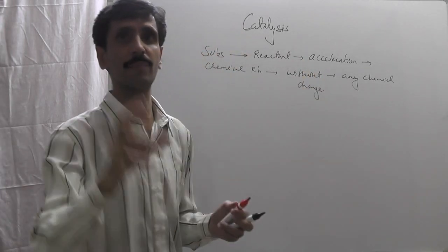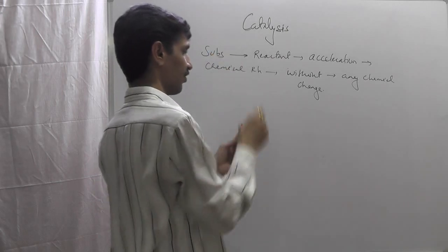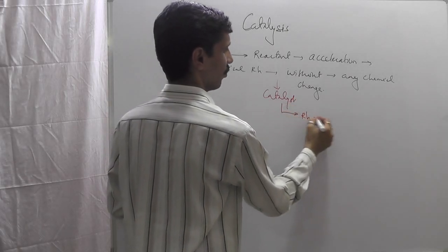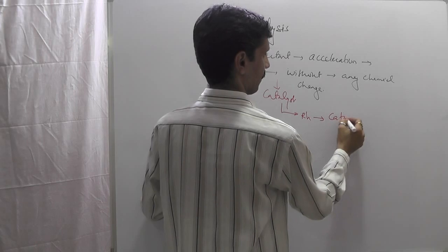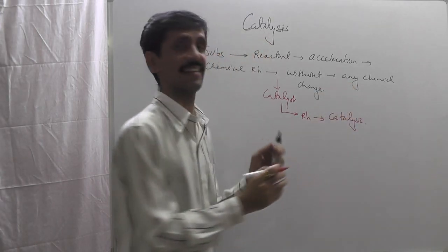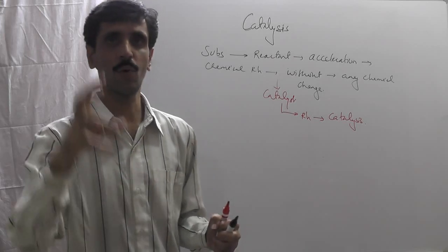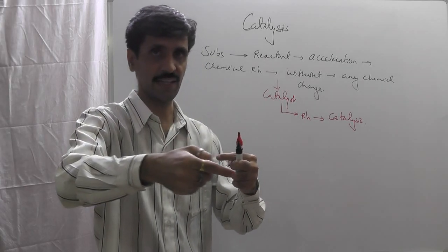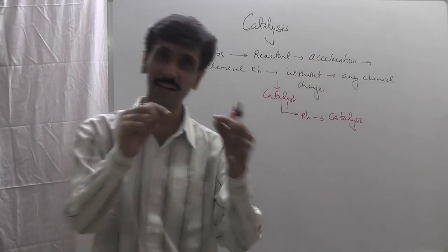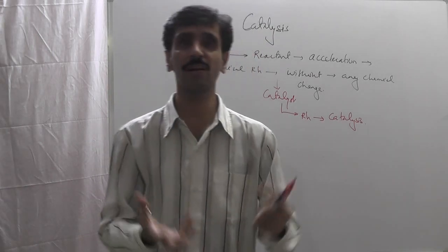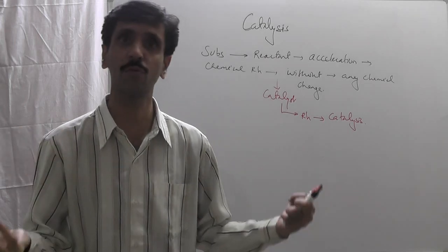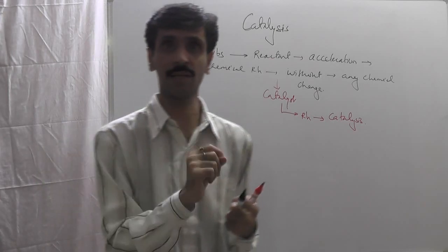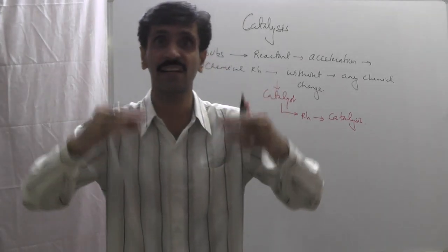This is what a catalyst is. The reaction in which the catalyst is being used is called catalysis or a catalytic reaction. A catalyst is a substance which is added to the reactant; it accelerates the rate of the reaction. Instead of using the word 'acceleration,' we can also use a more general word — 'modification' or 'alteration' — because there is sometimes a possibility where the rate of the reaction decreases.